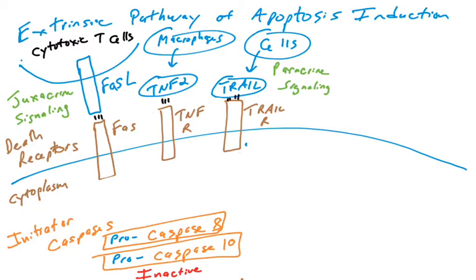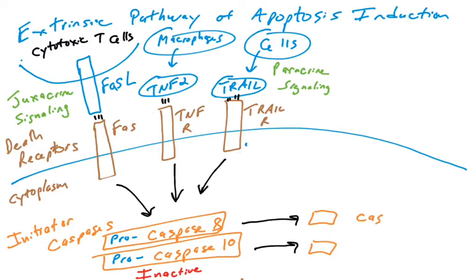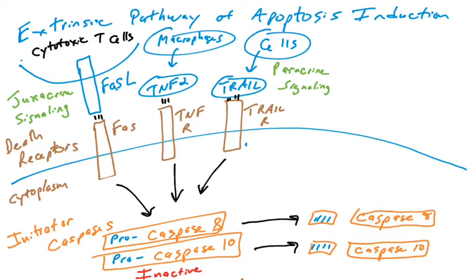When these ligands bind their receptors, that sends a signal into the cell. That signal will be transmitted to those procaspases. Procaspases activate when they become cleaved by a protease activity. These death receptors will activate a protease activity that leads to the cleavage of procaspase-8 and procaspase-10. When these procaspases are cleaved, the inhibitory domain is removed, and we are left with active caspase-8 and active caspase-10, which can then initiate apoptosis.